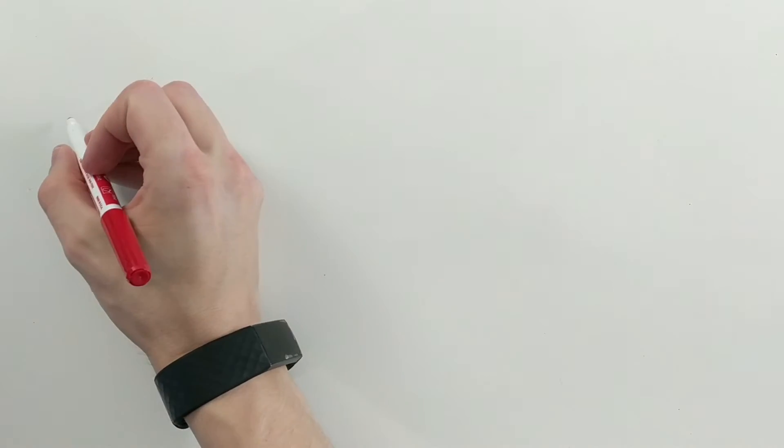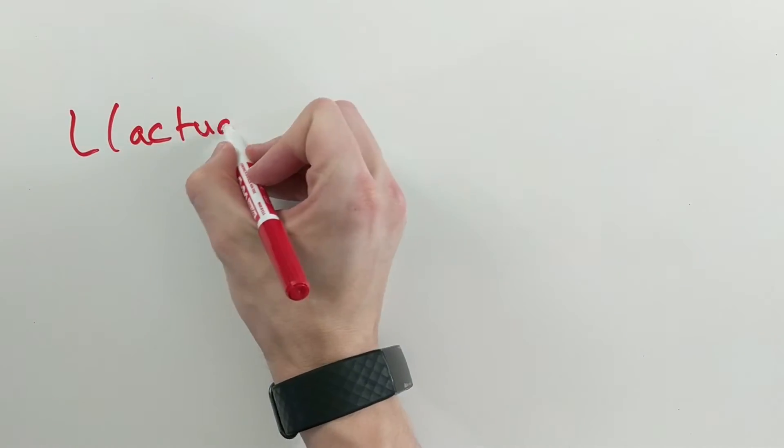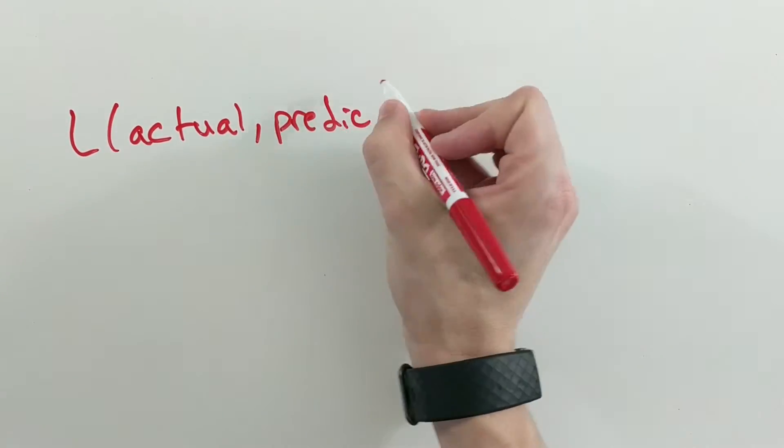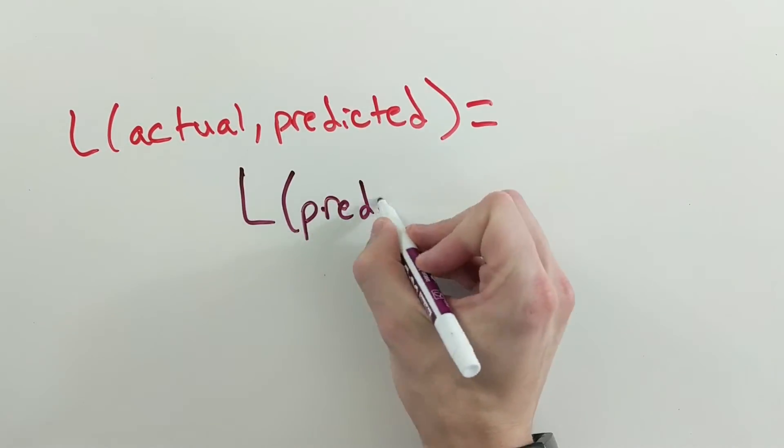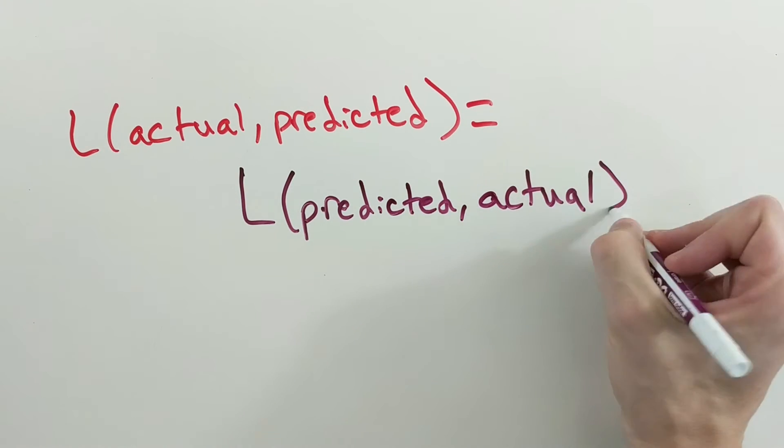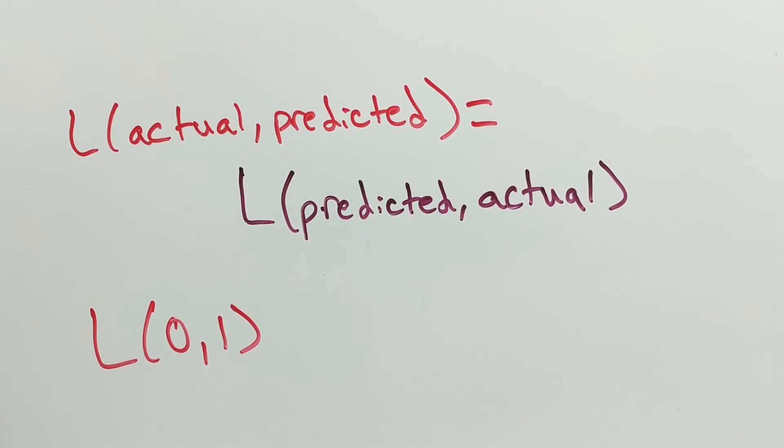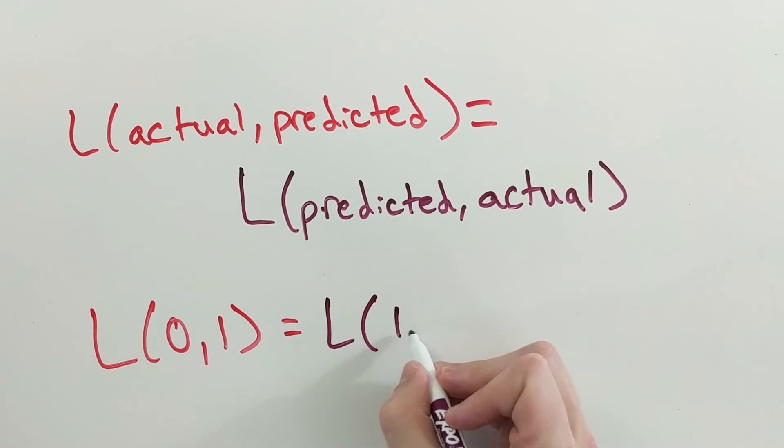A useful property of most loss functions is that they are symmetric. That is, for a loss function, the loss of actual and predicted is equal to the loss of predicted and actual. Most of the time, this is nice to have, since it makes sense that the loss of something being actually 0 but predicting it's 1, and the loss of something being actually 1 but predicting it's 0, should be the same.